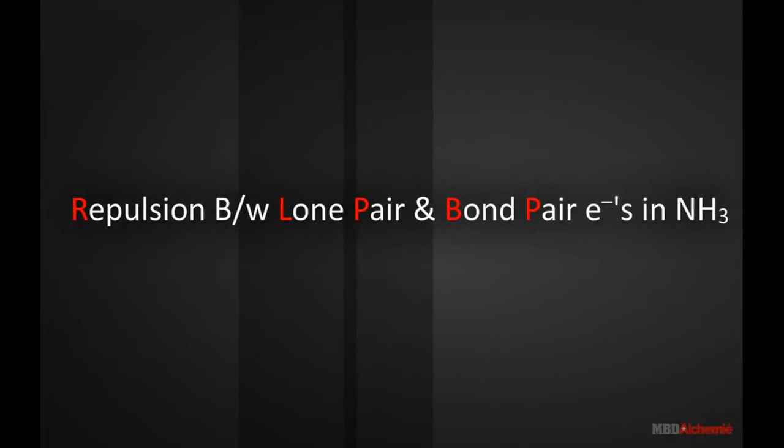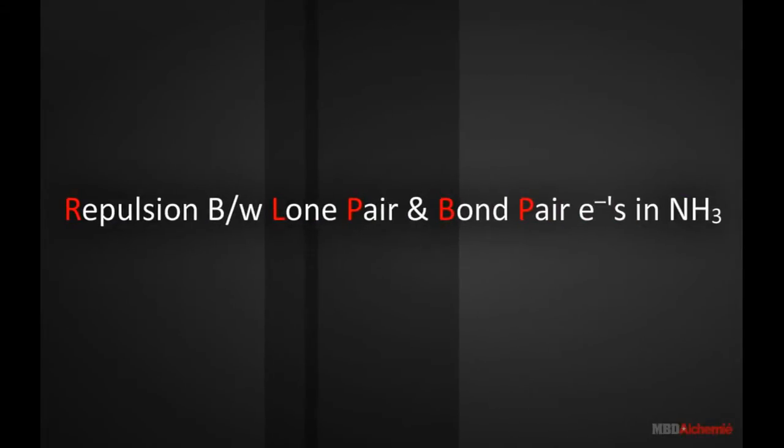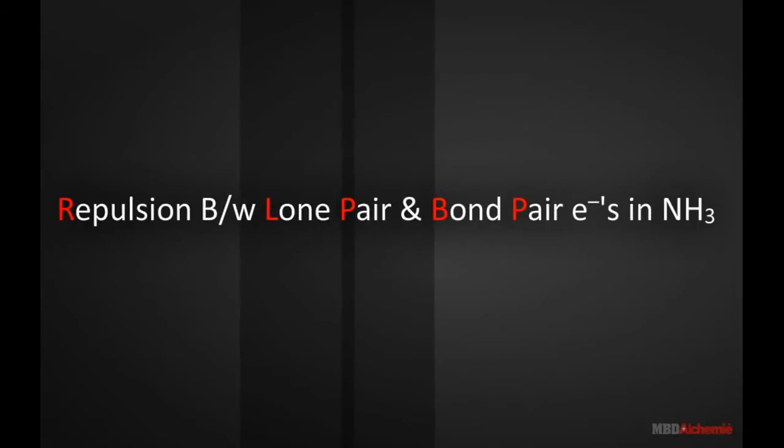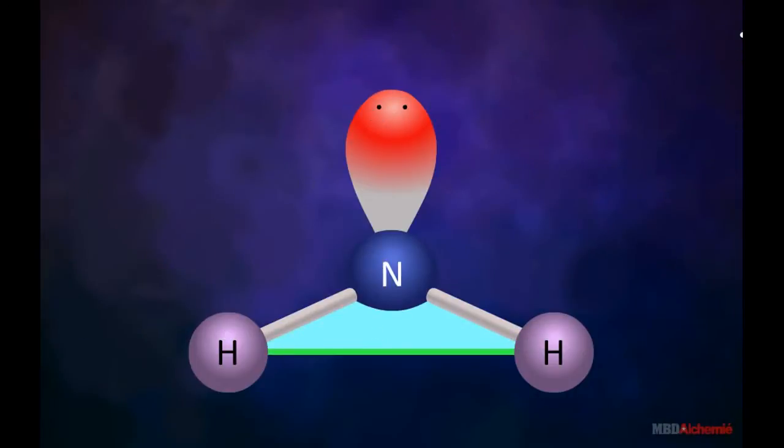Repulsion between lone pair and bond pair electrons in ammonia molecule. Ammonia molecule as shown has sp3 hybridized nitrogen atom in which three sp3 hybrid orbitals are attached to the hydrogen atoms.